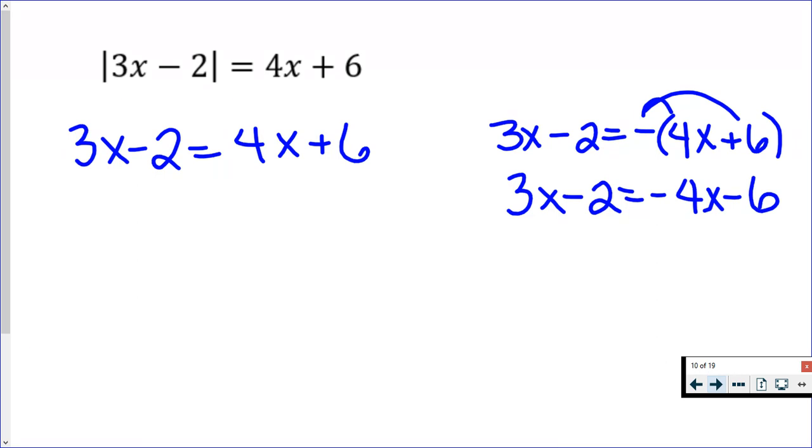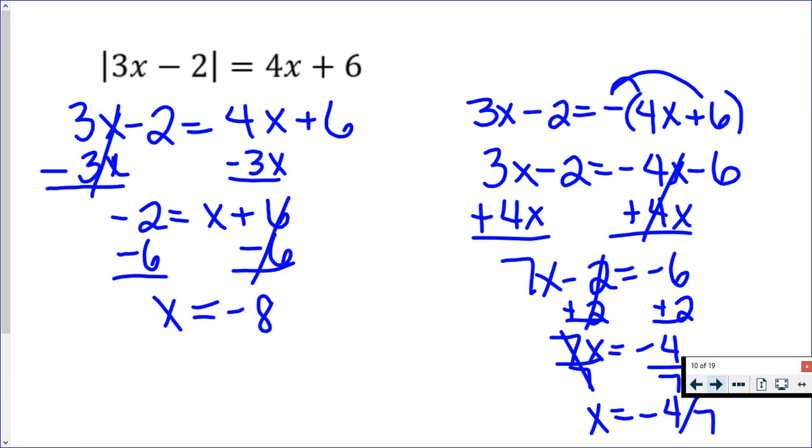Now you've got two equations to solve for x. I encourage you to pause the video and do that on your own because I will not be going through every single step here. This is what you should have gotten: x equals negative 8 and x equals negative 4 over 7. Look over my work and pause it if you have to. You need to make sure that you know how to solve these equations.